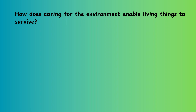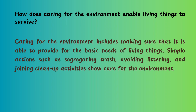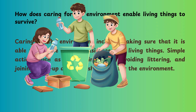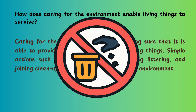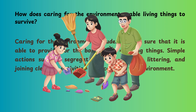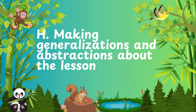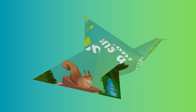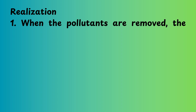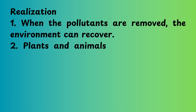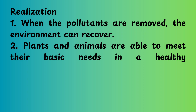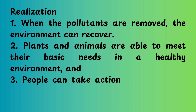How does caring for the environment enable living things to survive? Caring for the environment includes making sure that it is able to provide for the basic needs of living things. Simple actions such as segregating trash, avoiding littering, and joining clean-up activities show care for the environment. Realization: when the pollutants are removed, the environment can recover. Plants and animals are able to meet their basic needs in a healthy environment, and people can take action to protect the environment.